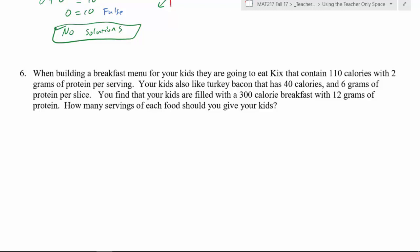The first thing I want you to do, whenever you're reading any word problem, I want you to find the variables. And keep in mind, the variable is something you don't know. Another way of framing it is saying, what is the problem asking me to find? And not all the time, but most of the time, you can read the last sentence or close the last sentence and get a pretty good idea of what your variables are. Right here, how many servings of each food should you give to your kids? So therefore, I'm looking for number of servings. Now let's see how many different kinds of food there are. When building a breakfast menu for your kids, they're going to eat Kix cereal that contain 110 calories with 2 grams of protein per serving. And they're also going to be eating turkey bacon that has 40 calories and 6 grams of protein. So don't get distracted by the calories and protein. That's not the variable. The question was, how many servings of each food?